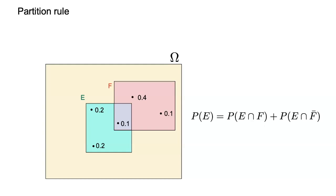There is an interesting formula called the partition rule. If you want to partition event E according to another event F, you divide E into two parts: the part of E where F happens, and the part of E where F does not happen. These two parts are disjoint — you cannot be both in F and not in F. Because they are disjoint and their union is E, you can write E as the union of E∩F and E∩F̄. That's called the partition rule.